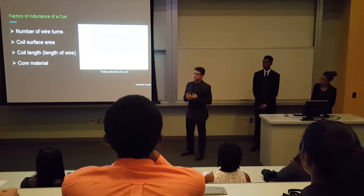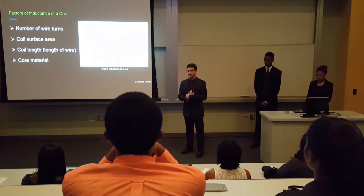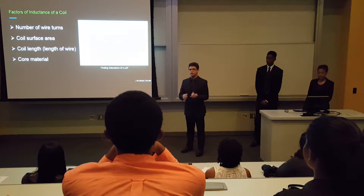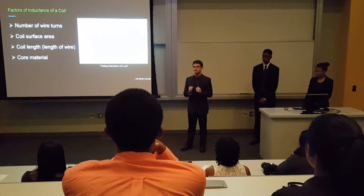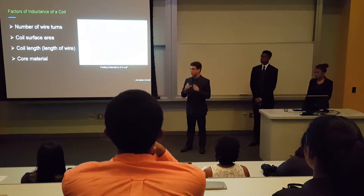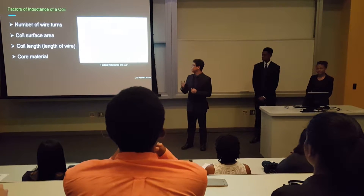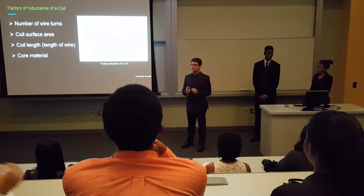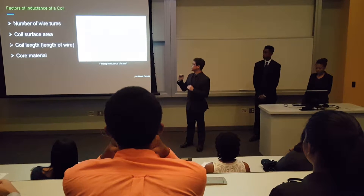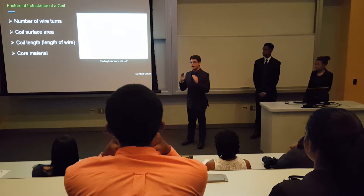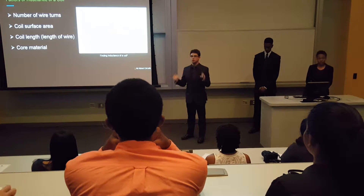There are multiple factors that affect the inductance of a coil: the number of wire turns, the surface area of the coil, the coil length — referring to the total length of wire used — and the core material. In our case, all coils used an air core, and all had eight turns. So what we were modifying was the coil surface area and wire length. By the inductance equation, more surface area yields higher inductance, while a longer wire decreases inductance due to internal resistance.